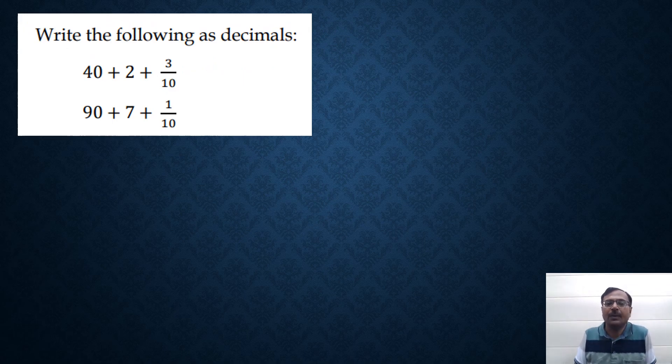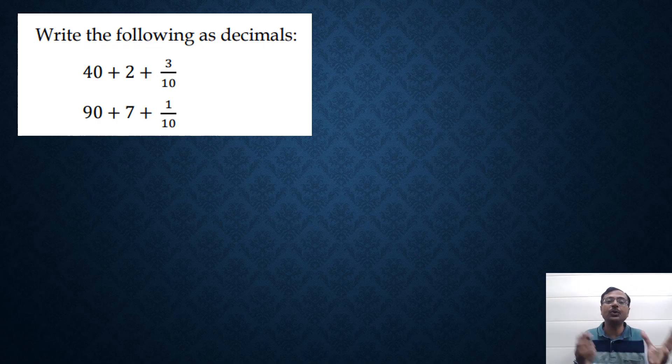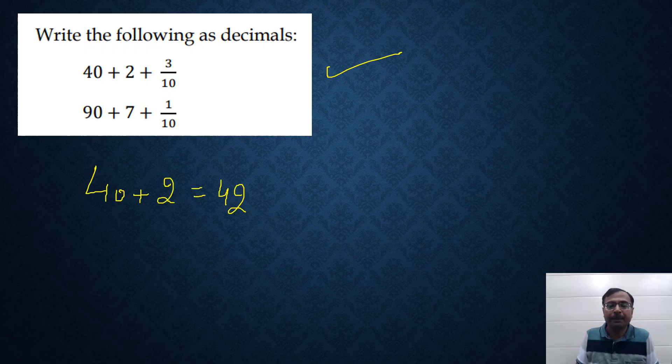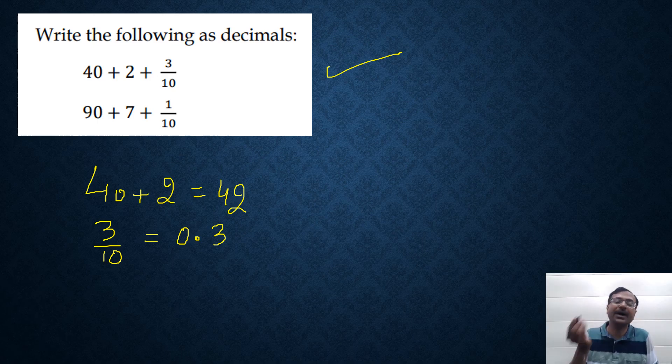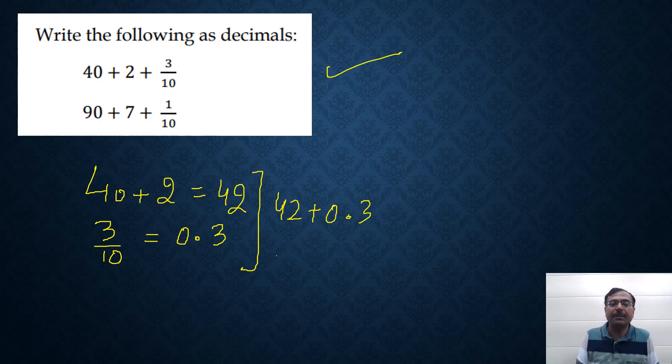Let's see some of the questions now. When the expanded form is given to us and we have to convert that into a decimal, see 40 plus 2 plus 3 tenths. 40 plus 2 is elementary, right? 40 plus 2 is 42. But 3 upon 10, you should know that it is 0.3. When we divide anything by 10, we put a decimal one digit from the right hand side. So, 0.3 and therefore, when you add them, 42 plus 0.3 will become 42.3.